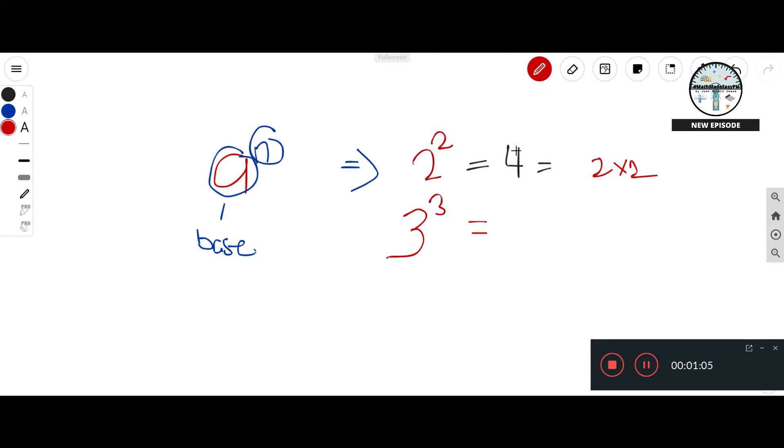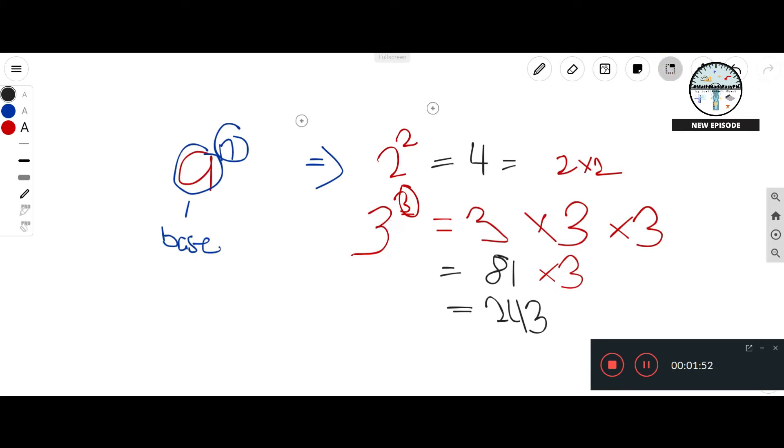Another example is 3 raised to 3. So here's the tip: whenever you make the expanded form, we have 3 right? So we will write three three times because it says here three. So three times three, we have two threes now, so another three. That is three raised to three, so that is three times three times three. And if we just simplify it, so 9 times three that is equal to—bring out your calculator if you want to—it's equal to 27.